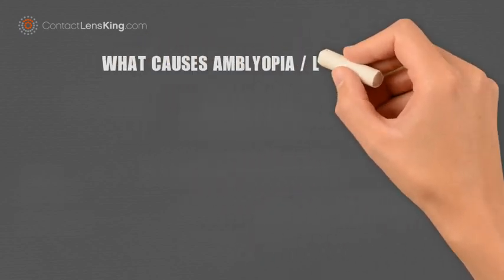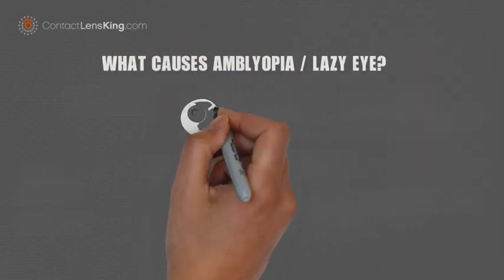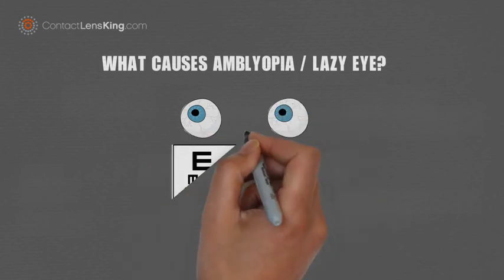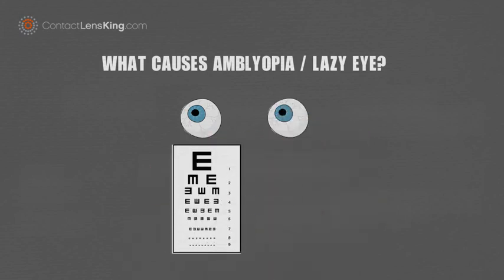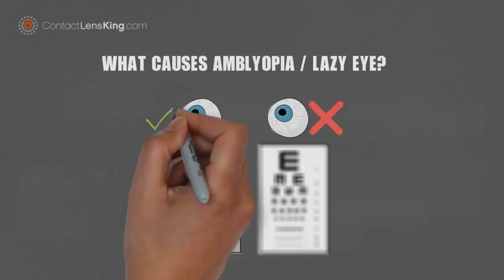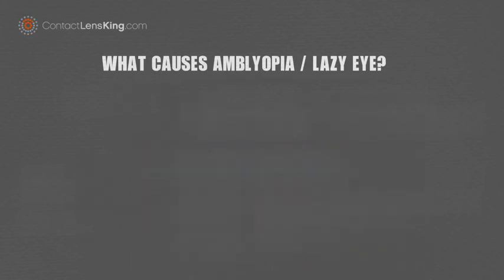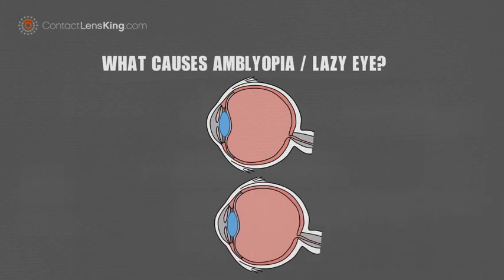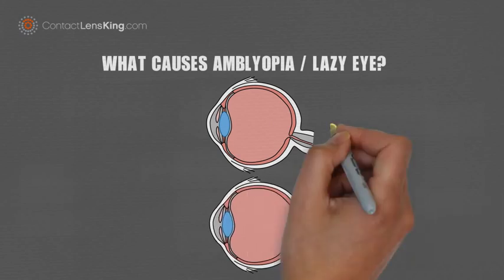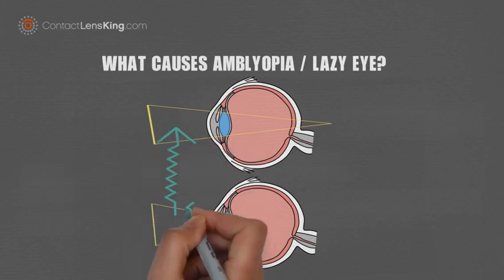What causes amblyopia, also known as lazy eye? Amblyopia, or lazy eye, is a medical term used to describe the occurrence of reduced vision in one eye compared to the other. As a disorder, amblyopia can encompass anyone who requires vision correction, regardless if it is farsightedness, nearsightedness, or virtually anything in between.